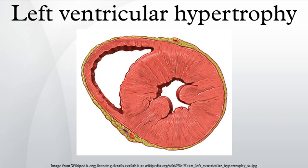Left ventricular hypertrophy is the thickening of the myocardium of the left ventricle of the heart. While ventricular hypertrophy occurs naturally as a reaction to aerobic exercise and strength training, it is most frequently referred to as a pathological reaction to cardiovascular disease or high blood pressure. While LVH itself is not a disease, it is usually a marker for disease involving the heart.